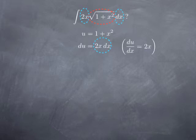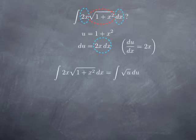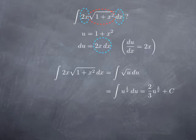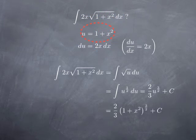So what was the square root of 1 plus x squared becomes the square root of u, and 2x dx becomes du. We substitute each part and obtain that the integral of 2x times the square root of 1 plus x squared dx equals the integral of the square root of u du. This is easier to integrate — it's u to the 1/2, so by the power rule we get 2/3 u to the 3/2 up to a constant. Substituting back, u equals 1 plus x squared, giving us 2/3 times (1 plus x squared) to the 3/2 plus a constant — the same result as before.